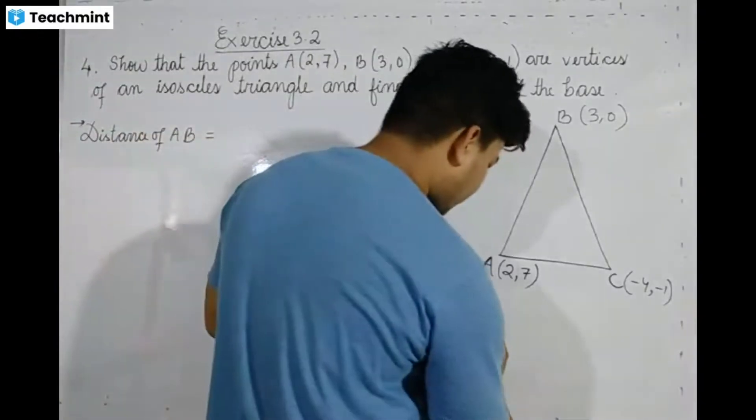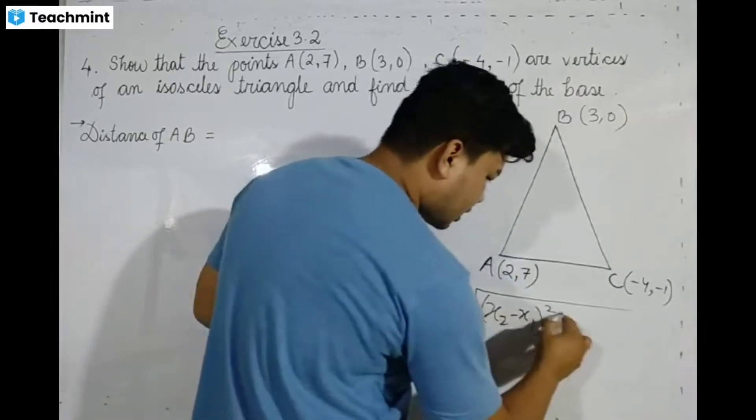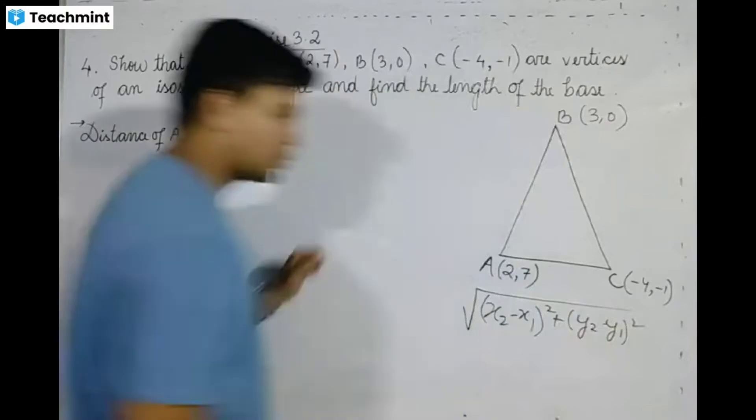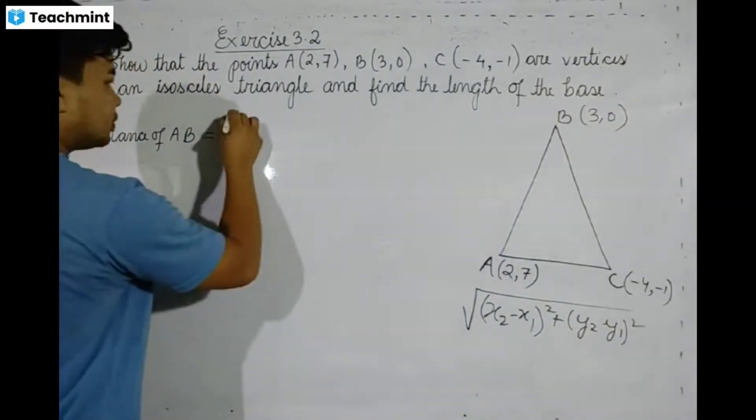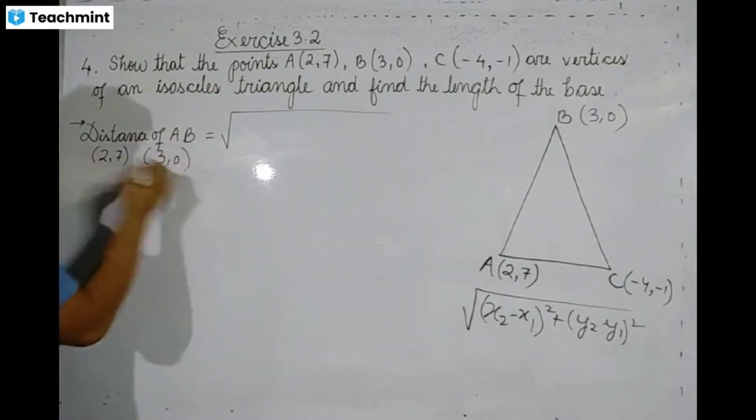The distance formula is: square root of (x2 - x1)² plus (y2 - y1)². For distance AB, A's coordinates are (2,7), so x1 = 2 and y1 = 7. B's coordinates are (3,0), so x2 = 3 and y2 = 0.